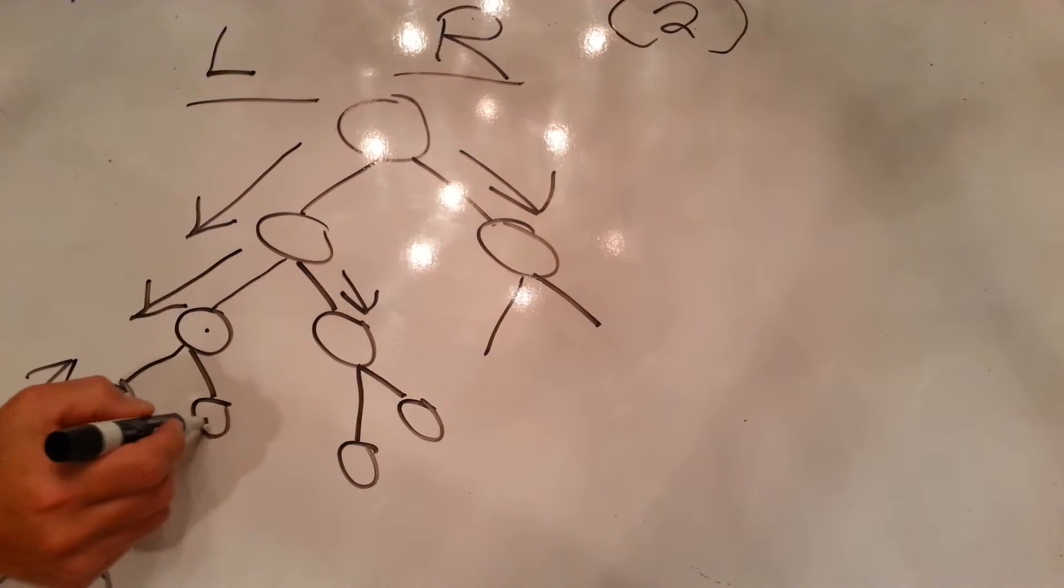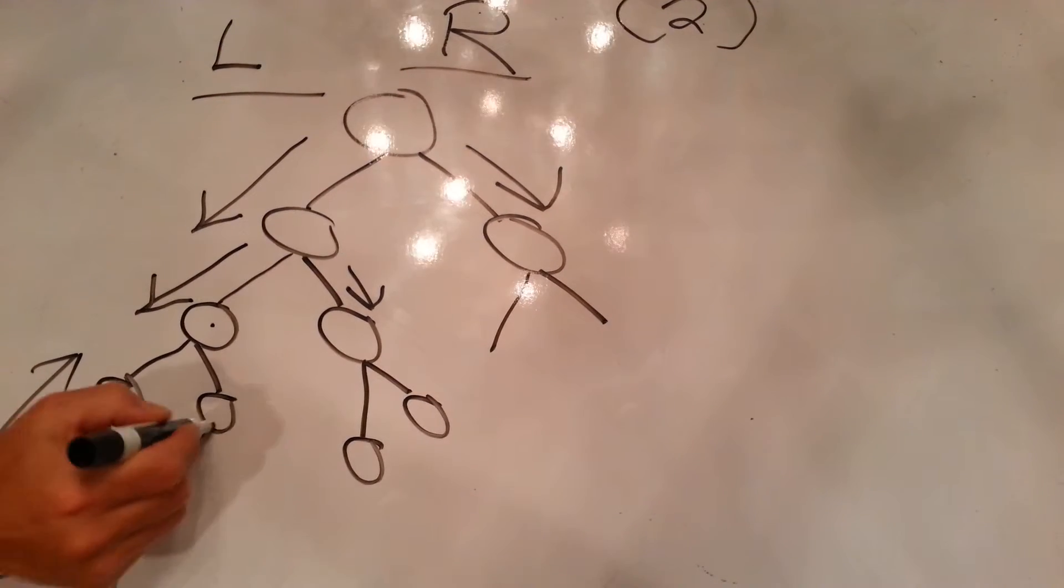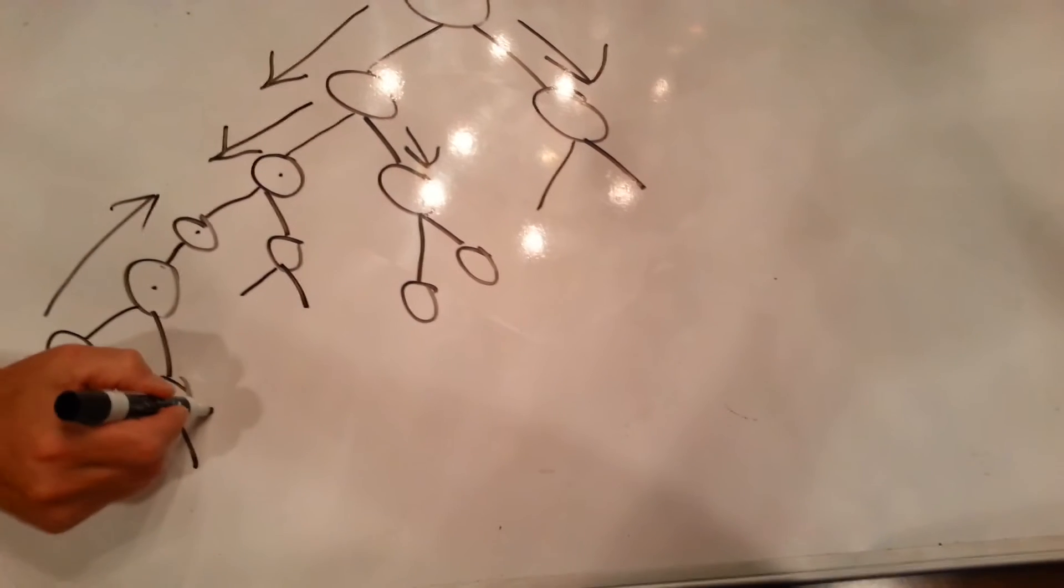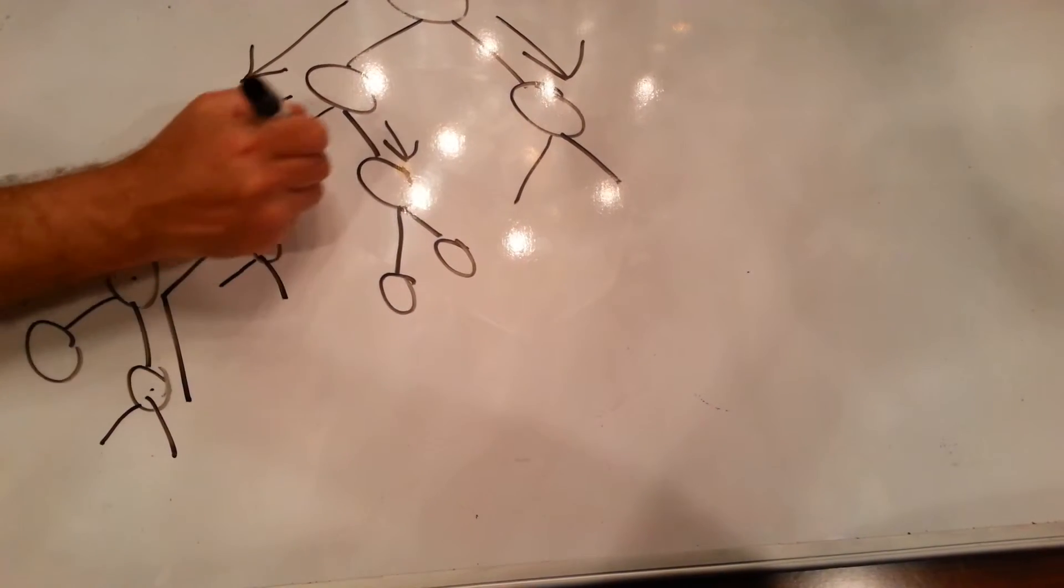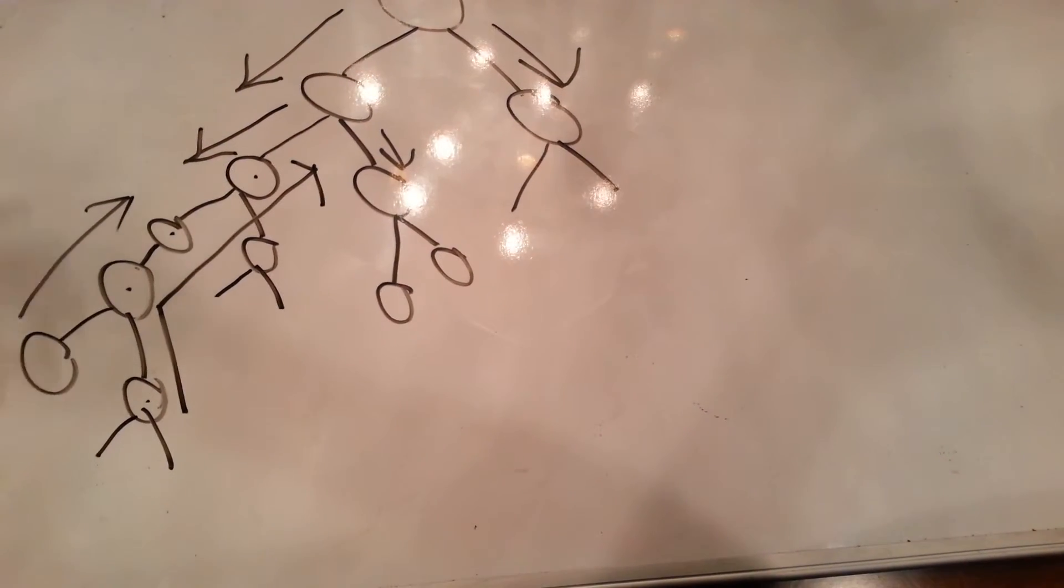This person will get credit for it. This person will not because they will have their own leg. This person will not because they'll have their own leg. But this person's volume will roll to here and then up. So it's the beautiful thing of a binary.